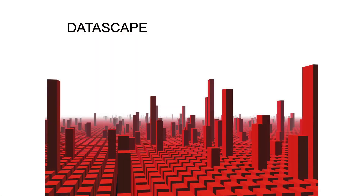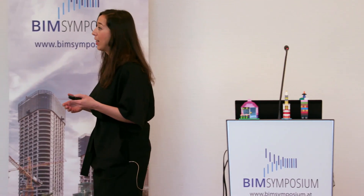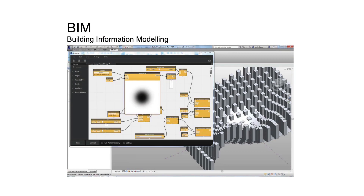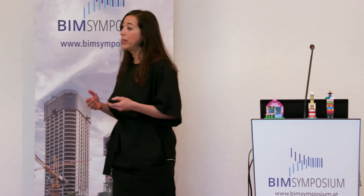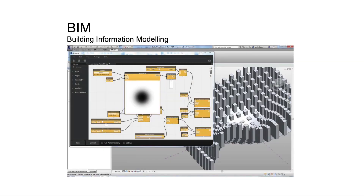This is what we consider: the design can literally be defined by parameters, by data. With the help of Revit and Dynamo — the visual programming of Revit — we can define how our design will be without any fixed geometry or intuition. We follow all the constraints that all the stakeholders involved in the process are bringing to us.